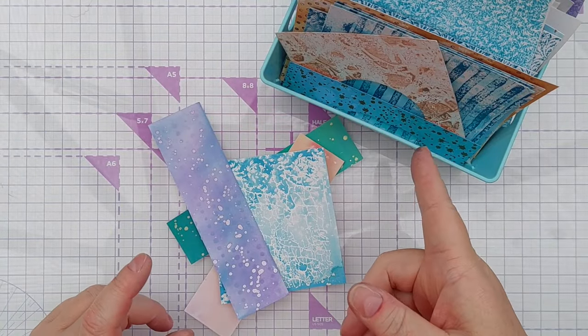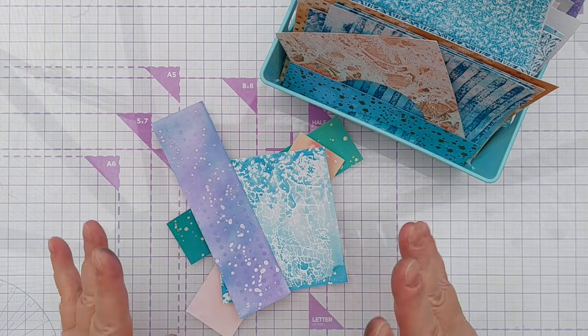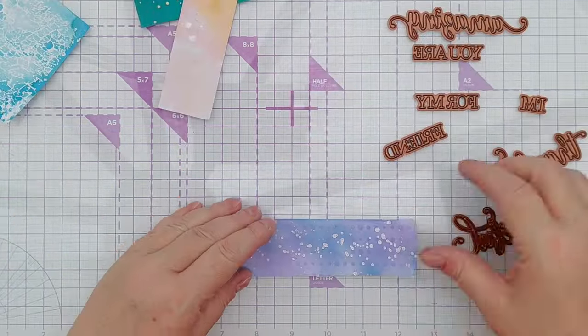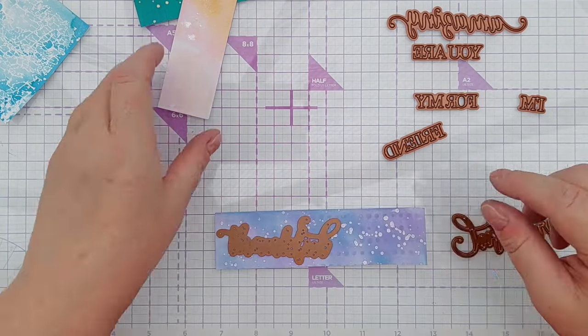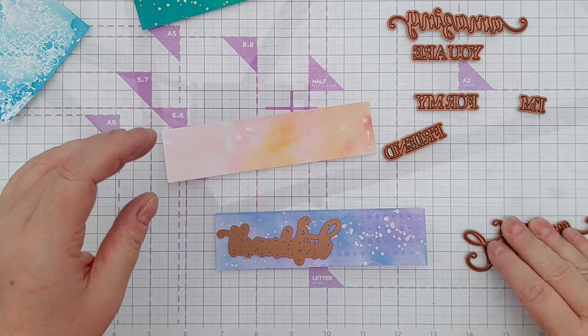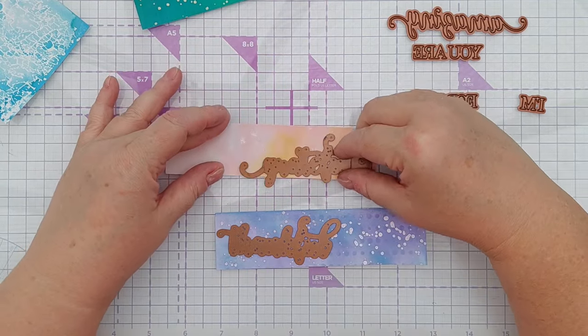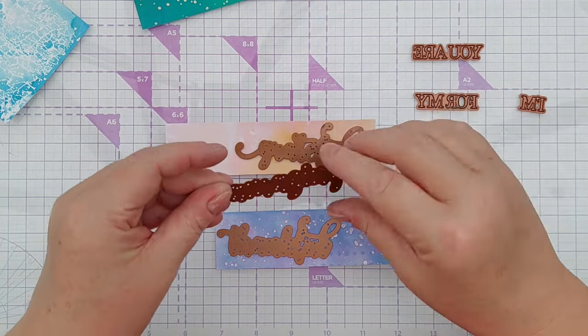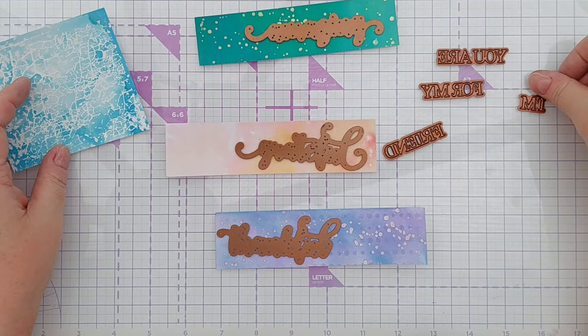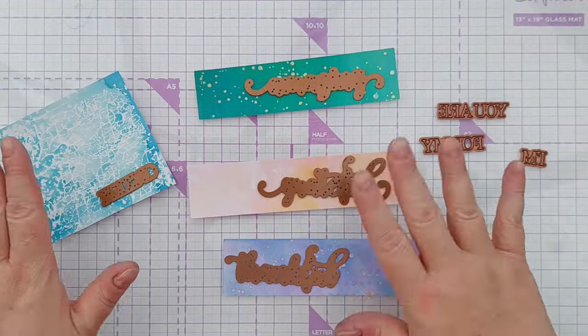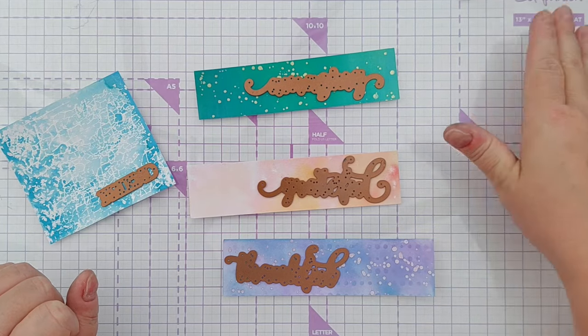And I've been through my box of backgrounds and bits and pulled out four bits that I think will work as sentiments. And I'm going to use some of these creative expressions dies to cut out my sentiments from these backgrounds. So I've got thankful and grateful and amazing and then we've got you are for my I'm friend. And I think I'll do the main word in colour and then these ones here I think I'll think about.